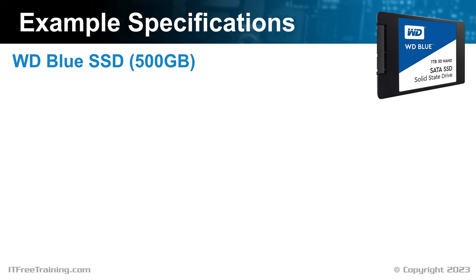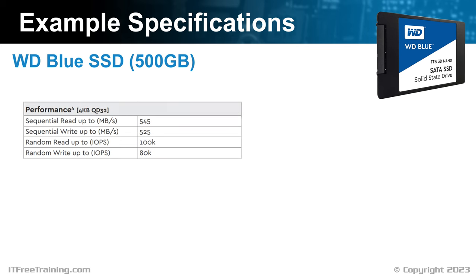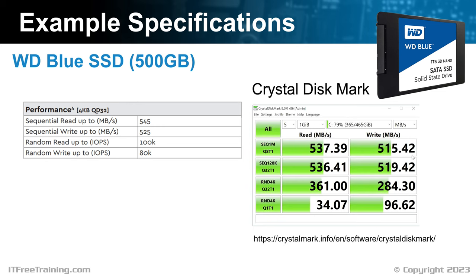Some specifications, like a burst specification, will only give you an idea of how the solid state drive will initially perform and not when it is under load. For this solid state drive, I will look at four of the performance specifications. These specifications were calculated using some free software called CrystalDiskMark. This software essentially performs some tests on the solid state drive giving you an indication of how fast the solid state drive will run. Make sure before you run the test you don't have any other software running or using the solid state drive as this will affect the results.